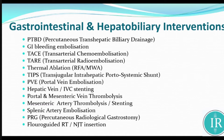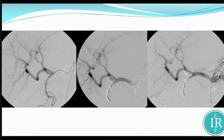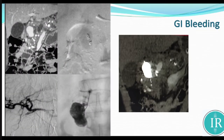GI and hepatobiliary interventions include PTBD and GI bleeding. Any type of ERCP that fails, we can do percutaneous transhepatic biliary drainage and place a stent through it. This is GI bleeding with aneurysm — the patient is a bleeder, and we can perform endovascular coiling. This is GI bleeding with aneurysm.